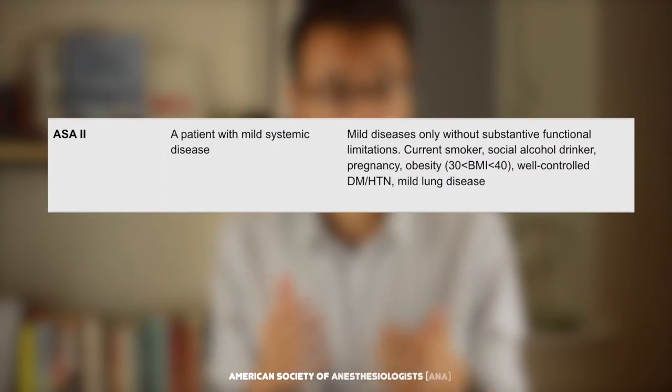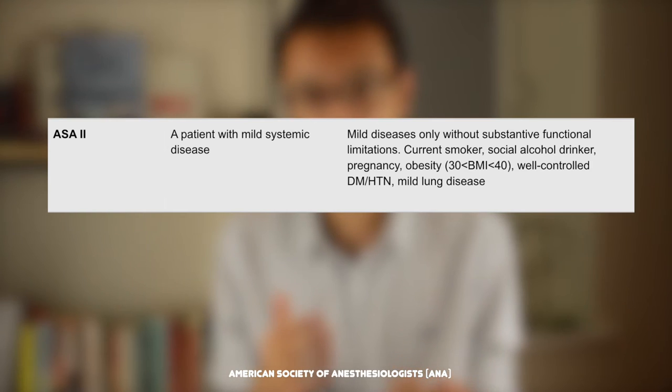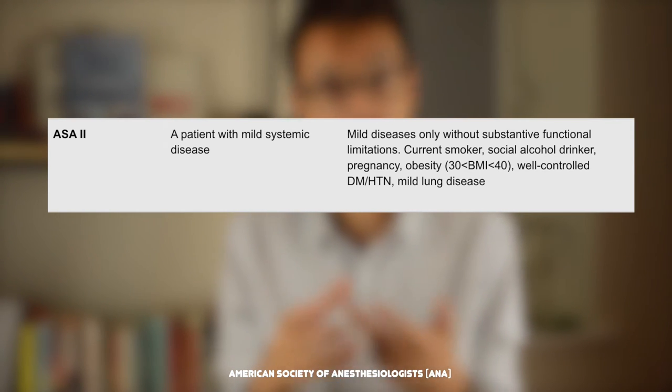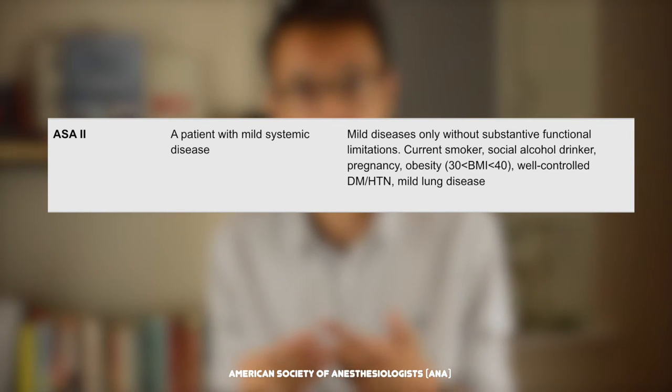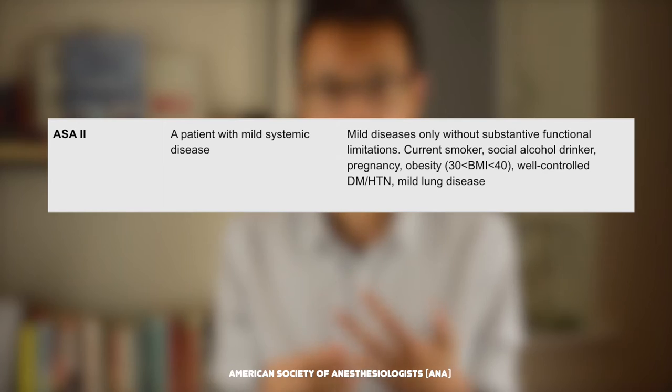We then have ASA 2, which is probably the most common of all of the classes. This describes a patient with mild systemic disease — someone who has a condition but it doesn't have any functional limitations. This includes patients who are active smokers, BMI between 30 and 40, pregnant patients, social alcohol consumption, and patients who have well-controlled conditions such as well-controlled diabetes, well-controlled hypertension, and well-controlled epilepsy.